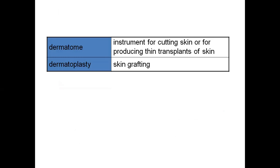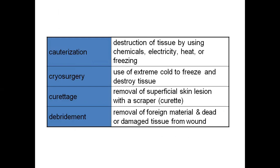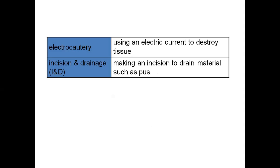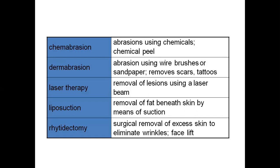Dermatoplasty means skin grafting. Cauterization is destruction of tissue such as gangrene using electricity, heat, or freezing. Cryosurgery uses extreme cold to destroy tissue. Curettage is removal of superficial skin lesions with a scraper. Debridement is removal of foreign material — dead or damaged tissue — from a wound. Electrocautery uses electric current to destroy tissue. Incision and drainage involves making an incision to drain material such as pus. Chemical abrasion uses chemicals to chemically peel off damaged tissue. Dermabrasion uses sandpaper, wires, and brushes — usually done to remove scars and tattoos. Laser therapy is removal of lesions with a laser beam; nowadays tattoos are also removed by laser therapy. Liposuction is removing fat under the skin by means of suction. Rhytidectomy — rhytido means wrinkles — is surgical removal of excessive skin to eliminate wrinkles, also called face lifting.